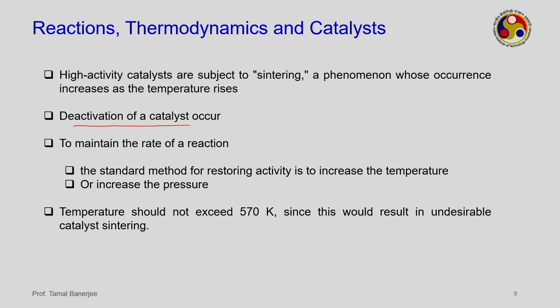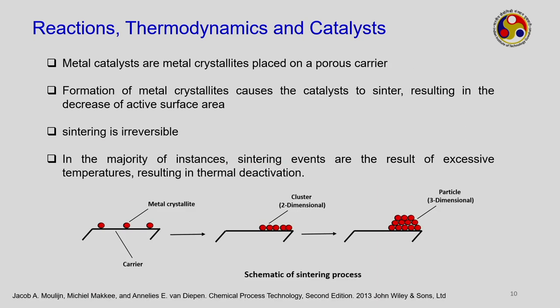In industry, to maintain the rate of reaction, the activity of the catalyst must be restored. Restoring activity means increasing temperature or pressure. However, a constraint is placed such that the temperature must not exceed 570 K, otherwise undesirable catalyst sintering results. Metal catalysts are metal crystallites placed on a porous carrier; for the methanol process, the active part is placed on a porous support.